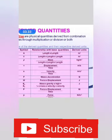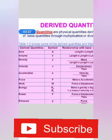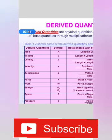These are the derived quantities obtained by the fundamental quantities. They are area, volume, density, velocity, acceleration, force, work, energy, power, and pressure. We will learn these derived and fundamental quantities briefly.